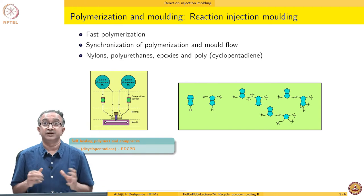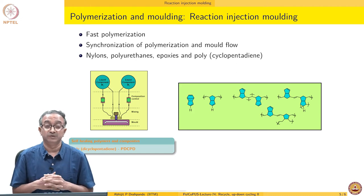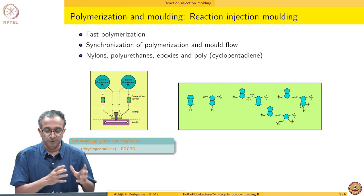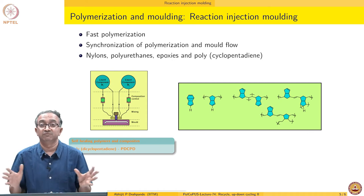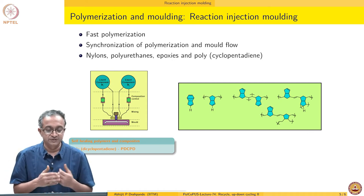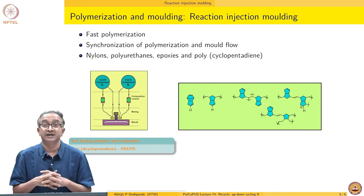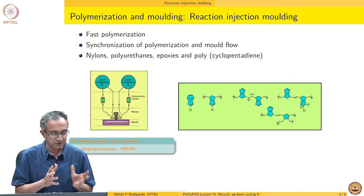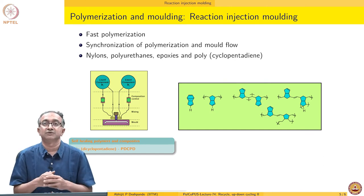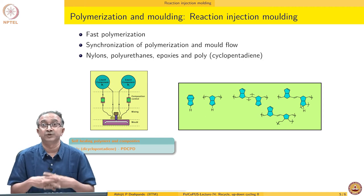We can also think in terms of an alternate process of using reaction injection molding. Because whenever there is fast polymerization, we can do synchronization of polymerization and mold flow. Effectively, we are combining the polymerization operation and molding in one. This is quite commonly used for nylons and polyurethanes and epoxies. And also, one of the polymers which is cyclopentadiene can also be made using this. Basically, the idea is to start with both components, monomers or monomers and catalysts, monomers and initiators and then meter and mix them and then basically make them flow into the mold.